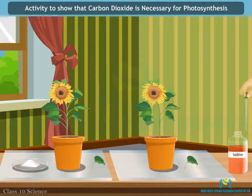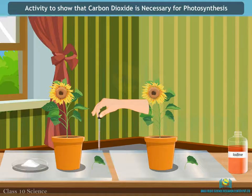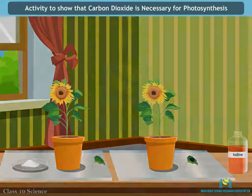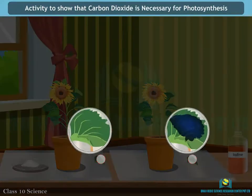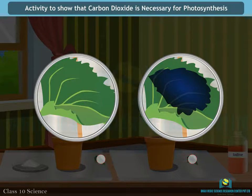Do both the leaves show the presence of the same amount of starch? We conclude that carbon dioxide is essential for the photosynthesis process. The carbon dioxide along with water combines to give glucose plus oxygen plus water.